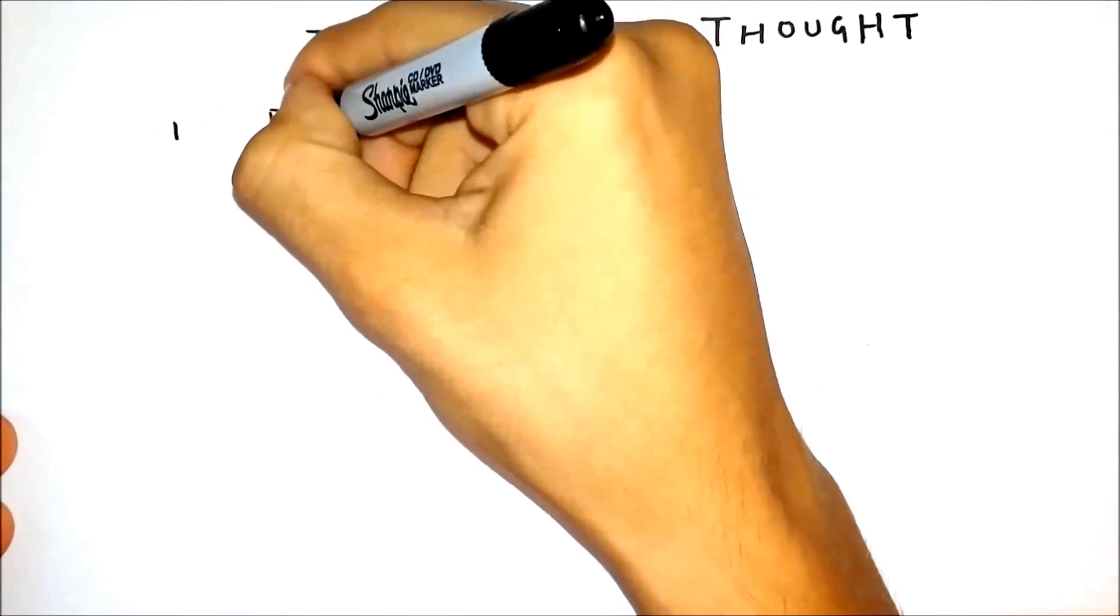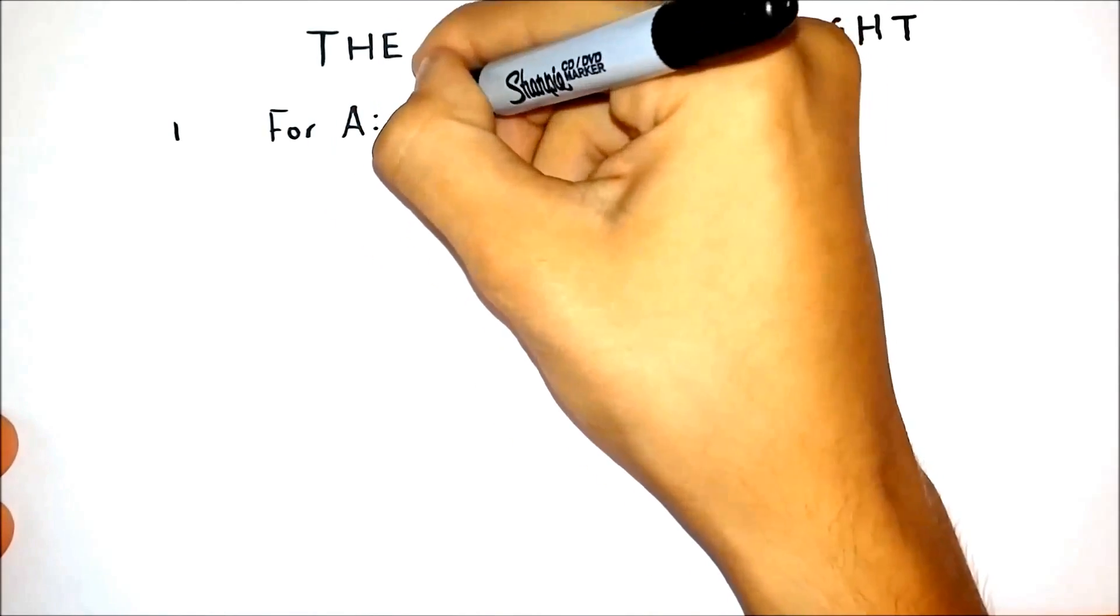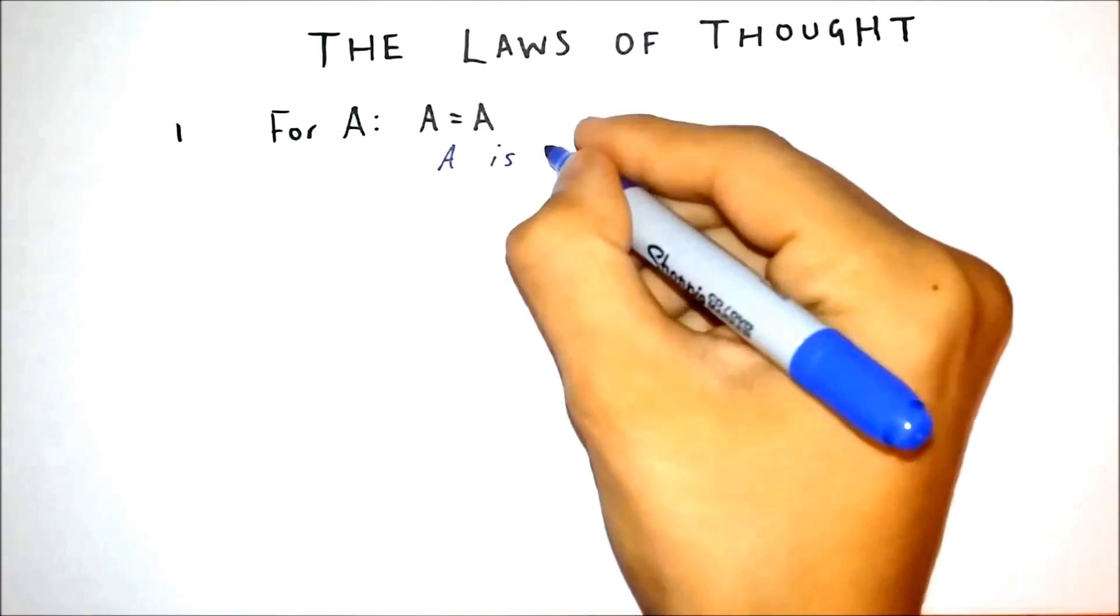The law of identity states, whatever is, is. For any proposition A, A equals A.